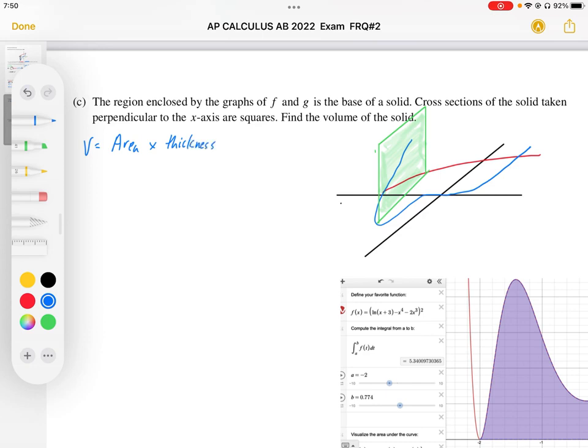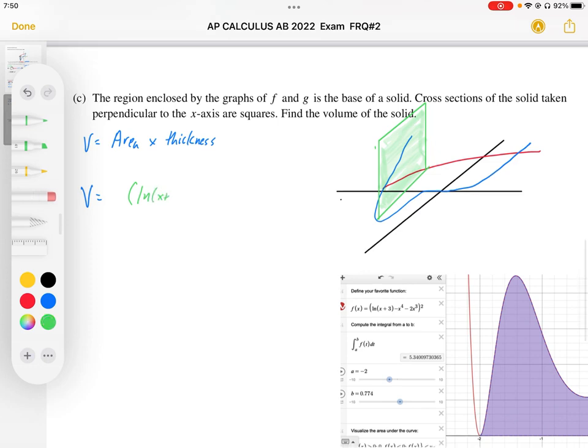So I need the cross sectional area. To calculate this volume, I'm going to take that cross sectional area. So that's going to be the difference between the log graph and... Maybe I'll keep this in color coding. So it's going to be the difference between the log graph, log of x plus 3, minus the polynomial function x to the fourth plus 2x cubed.